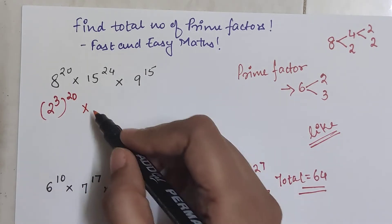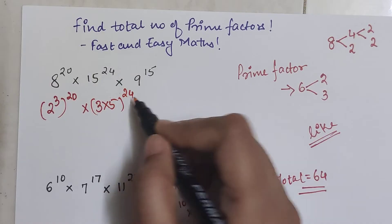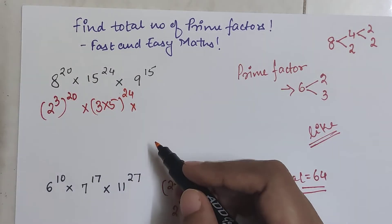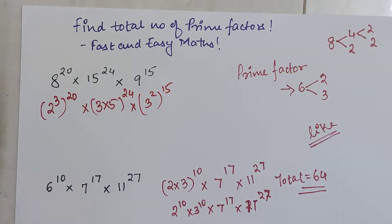Similarly, 15 can be written as 3 into 5 the whole raised to 24, and 9 is nothing but 3 squared the whole raised to 15.